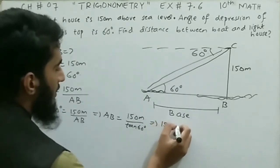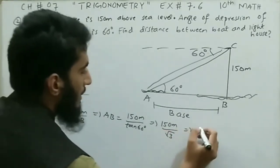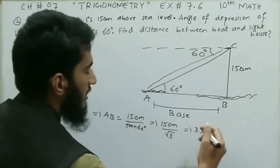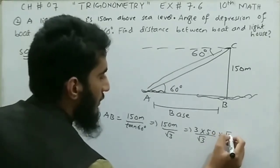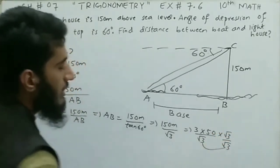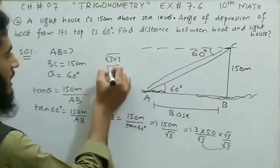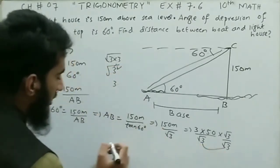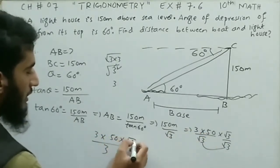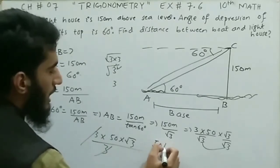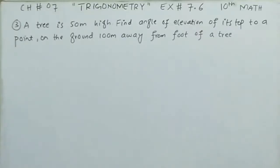By simplification: 150 meters divided by tangent 60, and we know that tangent 60 equals under root of 3. So AB equals 150 divided by √3. We can write 150 as 3 × 50, giving 3 × 50 divided by √3. Multiplying and dividing by √3: √3 × √3 gives 3, which cancels with 3, leaving 50 × √3. So the distance from the boat to the lighthouse is 50√3 meters.